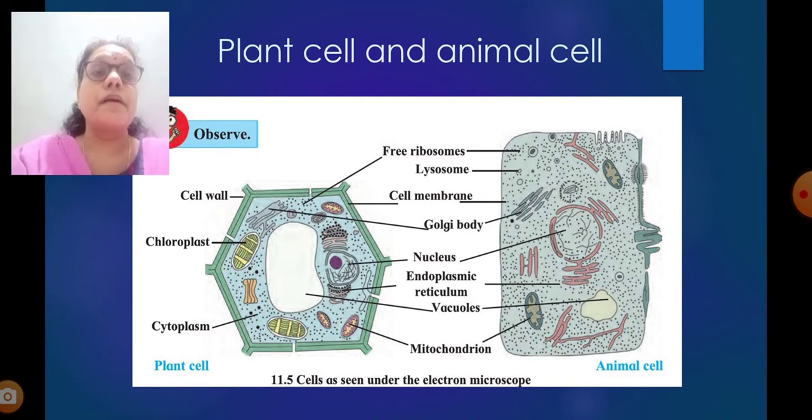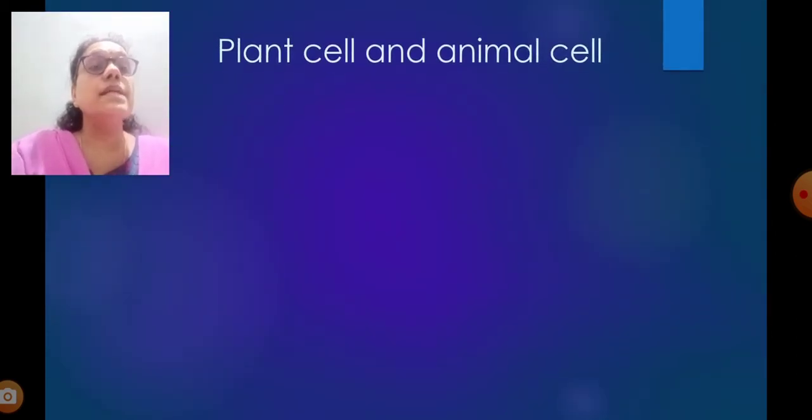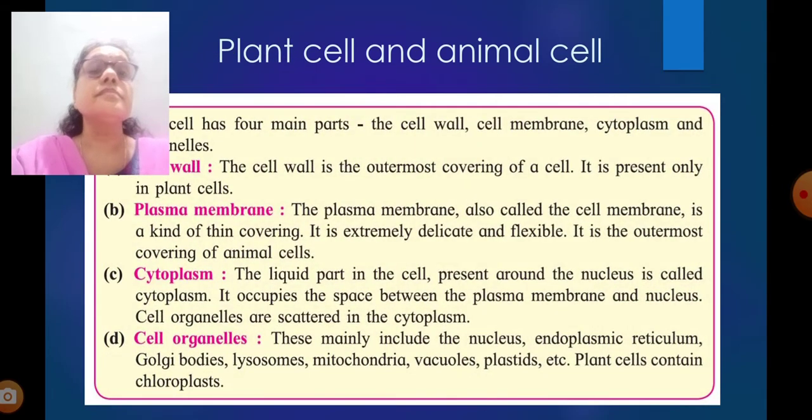Plant cell and animal cell. You can find the difference between plant cell and animal cell. The cell has four main parts: the cell wall, cell membrane, cytoplasm, and cell organelles.